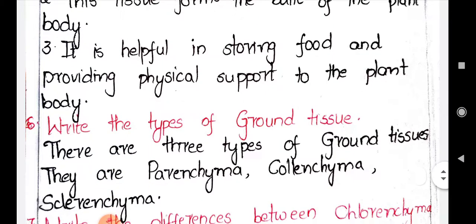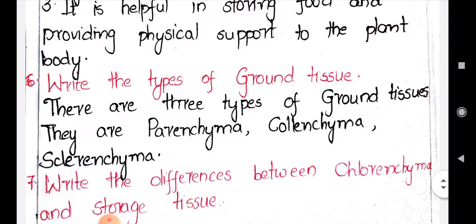Question 6: write the types of ground tissue. There are three types: parenchyma, collenchyma, and sclerenchyma.